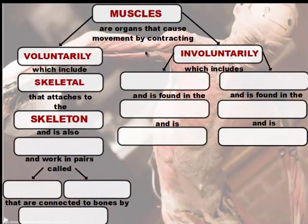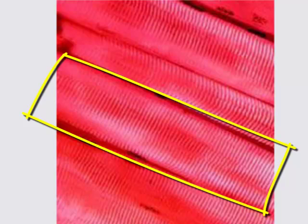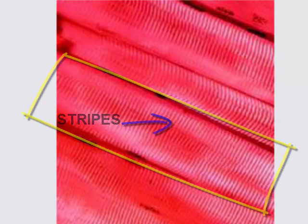Skeletal muscle cells are also known as striated cells. Striated simply means that the muscle cells are striped. If we take a look at one muscle cell, you'll notice that it is striped. The striped pattern is formed by the contracting units inside your muscles called sarcomeres. You'll see a bit more about how muscles work together to cause movement in the video clip we'll see shortly.